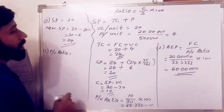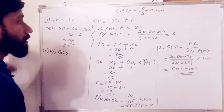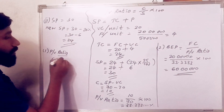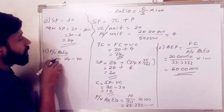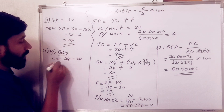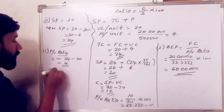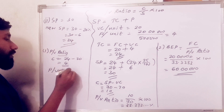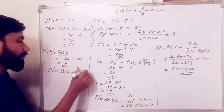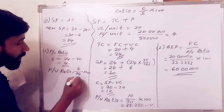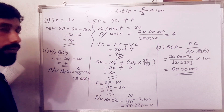New PV ratio equals contribution divided by sales. Contribution equals new selling price minus variable cost: 24 minus 20 equals 4. PV ratio equals 4 divided by 24, into 100, equals 16.6666%.